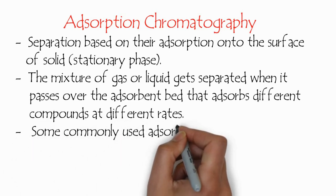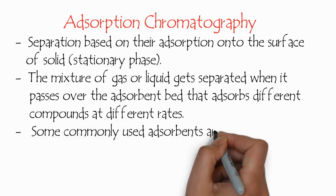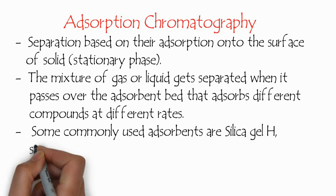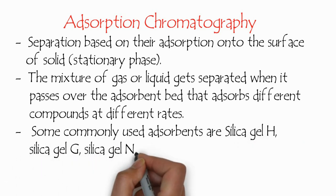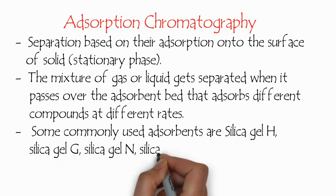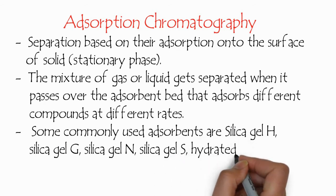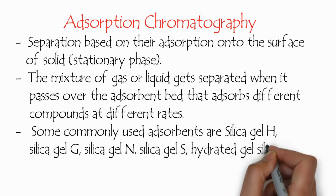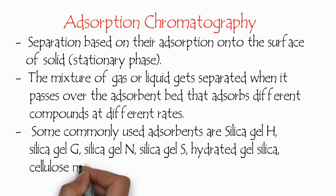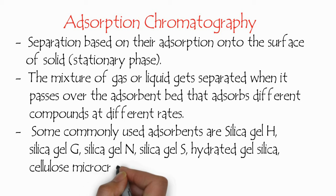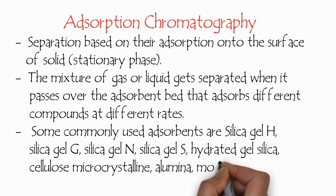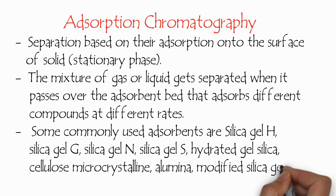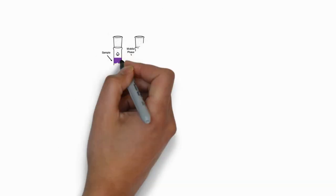Some commonly used adsorbents for adsorption chromatography are silica gel H, silica gel G, silica gel N, silica gel S, hydrated silica gel, cellulose, microcrystalline, alumina, modified silica gel, etc.